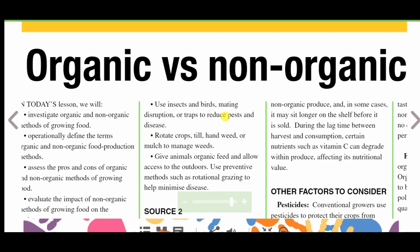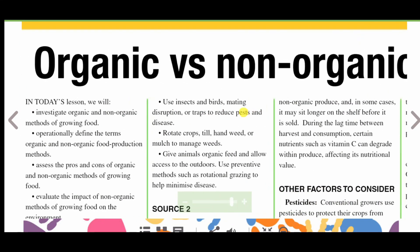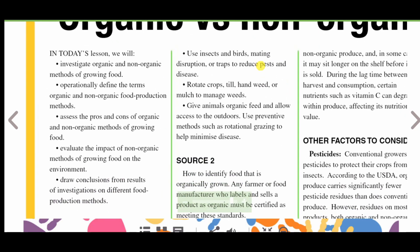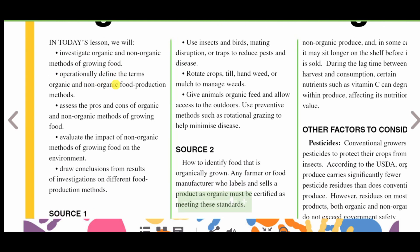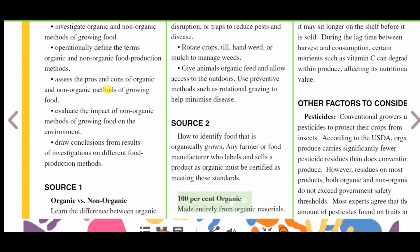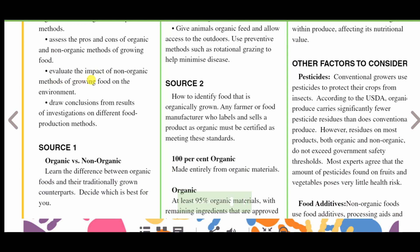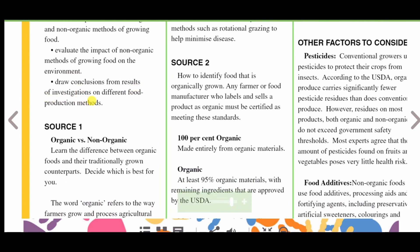In this episode, we are looking at organic versus non-organic foods. In today's lesson, we will investigate organic and non-organic methods of growing food, operationally define the terms organic and non-organic food production methods, assess the pros and cons of organic and non-organic methods of growing food, evaluate the impact of non-organic methods on the environment, and draw conclusions from the results of investigations on different food production methods.